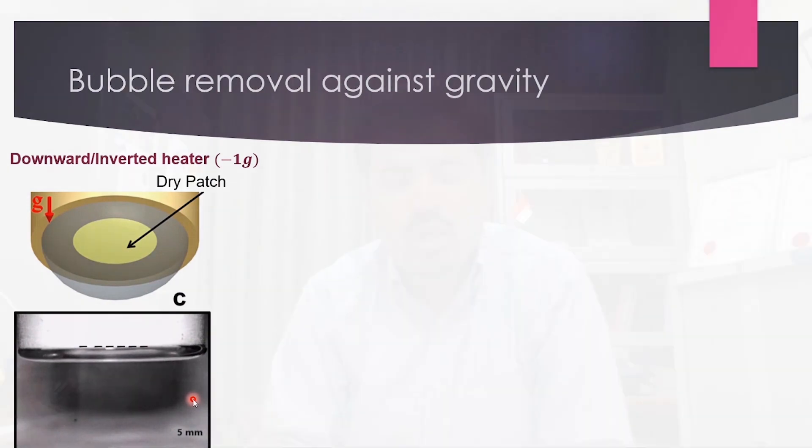Having established how to mimic zero gravity for bubbles on earth, we started working on solutions to facilitate bubble departure from this downward-facing surface. One simple approach is to add flow — but in zero gravity, energy is very expensive. A pump also brings vibrations that are detrimental, and the whole thermal management system becomes bulky. We wanted a completely passive solution that doesn't need energy.